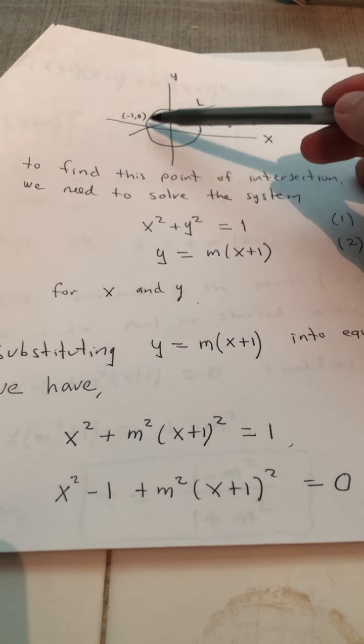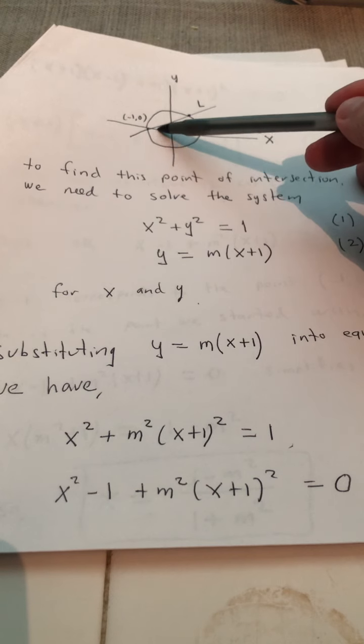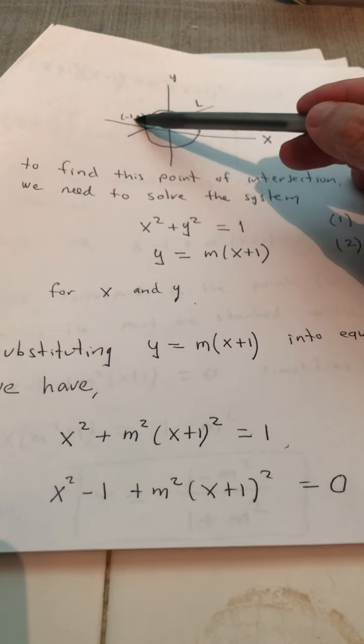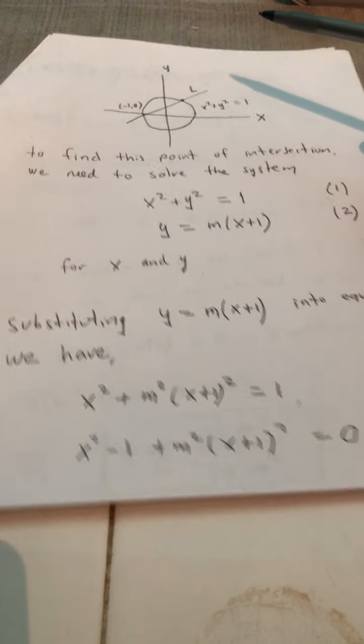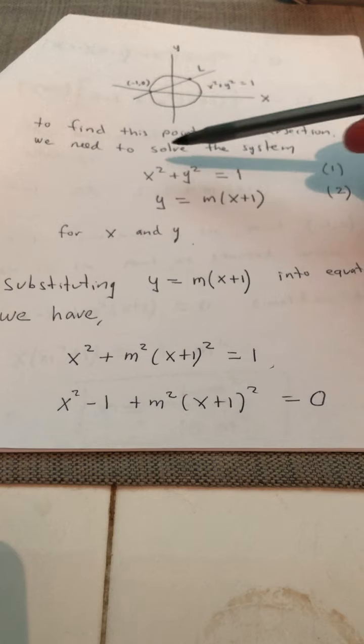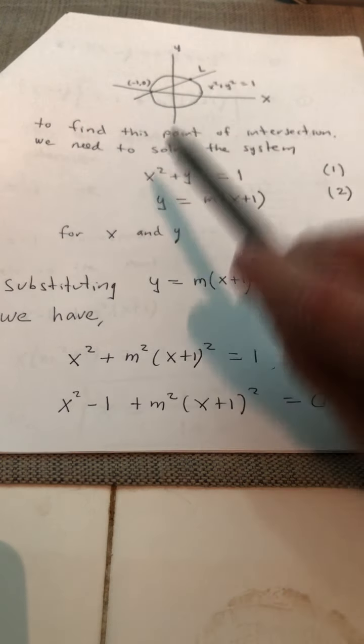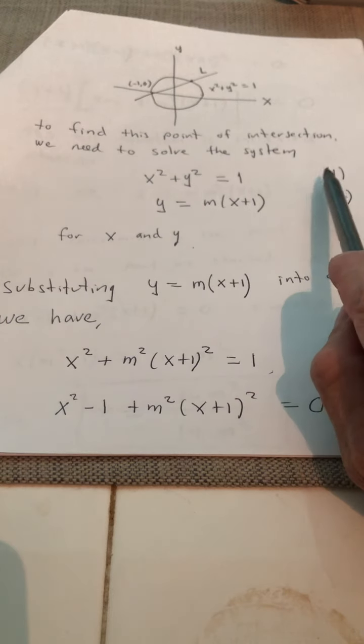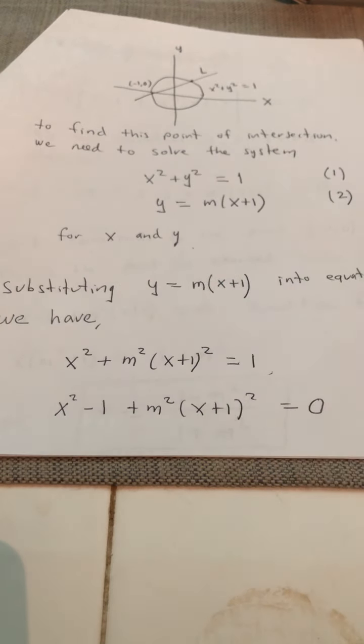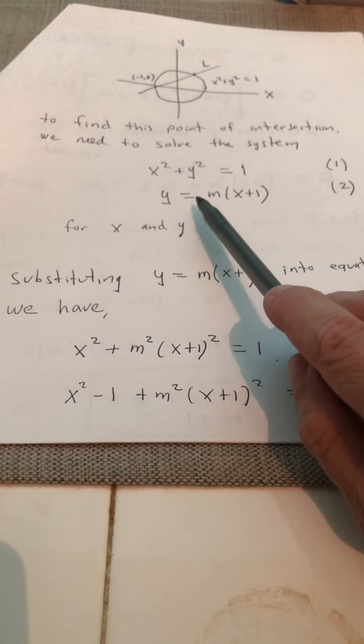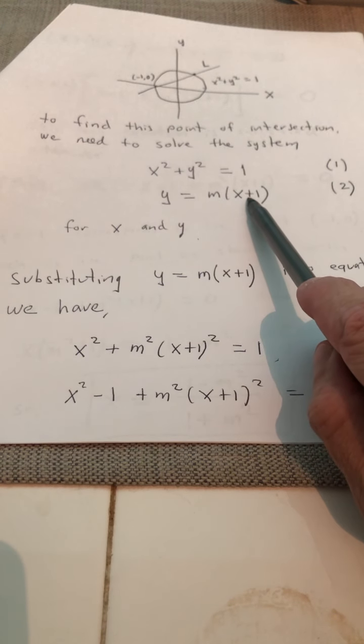But in any case, what's going to happen is this line is going to intersect the circle a second time, the first time being negative one, zero. So to find this point of intersection, we need to solve the system. One constraint is that the point has to be on the circle x squared plus y squared equals one. And also, this point has to be on the line y is equal to m times x plus one.